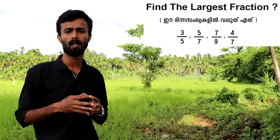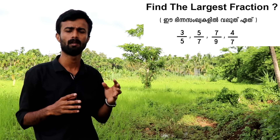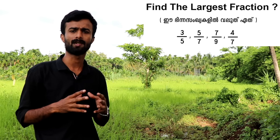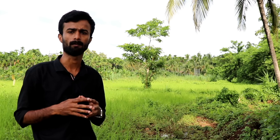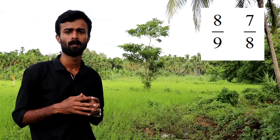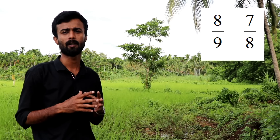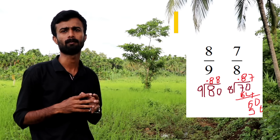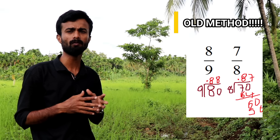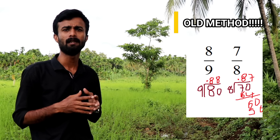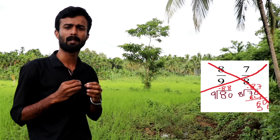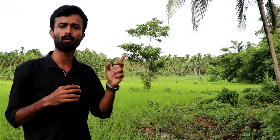Let me go back to the previous question. We have numbers and we need to compare them. We know 7/9 and 7/8. The method we use is cross multiplication — 7/8 divided gives approximately 0.87. For 7/8 and 8/9, we use cross multiplication.